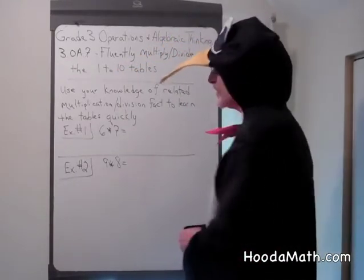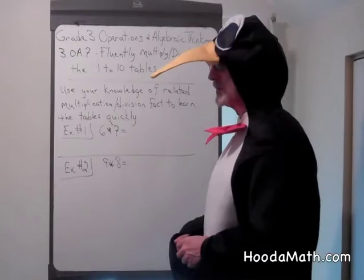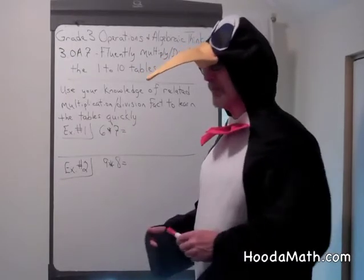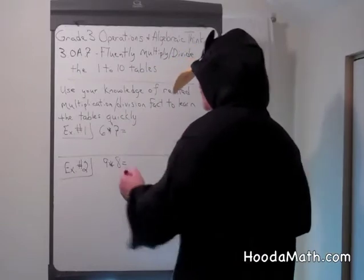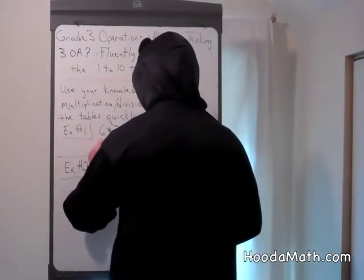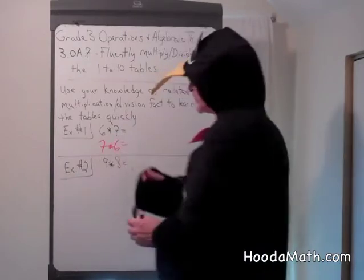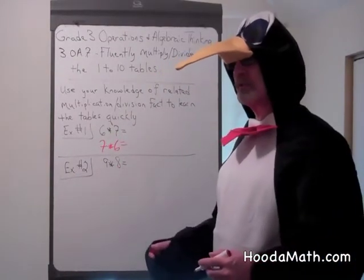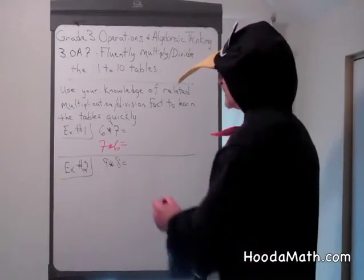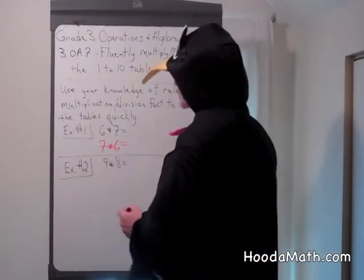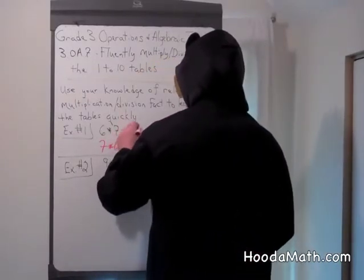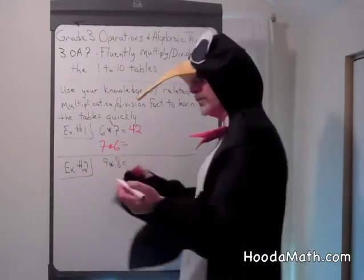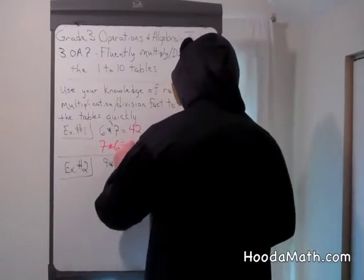So let's say you had difficulty remembering what 6 times 7 is. If you had difficulty knowing what 6 times 7 is, you'd also have trouble knowing what 7 times 6 is. That is a related fact. By using the commutative property, those are identical. They have identical products. So let's say you learned 6 times 7 is 42. Not only do you know 6 times 7 is 42, but you know 7 times 6 is also 42.